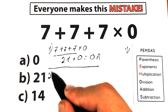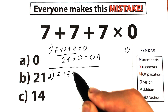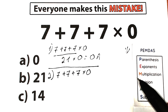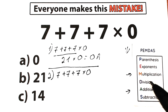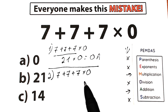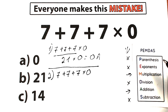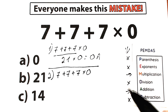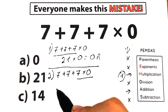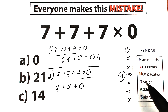So let's solve our challenge according to PEMDAS. We have 7 plus 7 plus 7 times 0. We have multiplication and we have addition. We don't have any parentheses, exponents, division, or subtraction — only multiplication and addition. According to PEMDAS, multiplication has a higher position than addition, so multiplication has higher priority. Our first step should be multiplication: we multiply 7 times 0, giving us 7 plus 7 plus 0. We've completed the multiplication step.